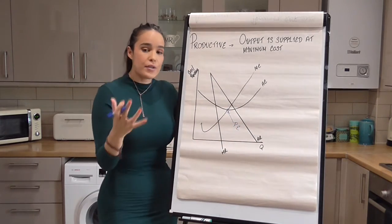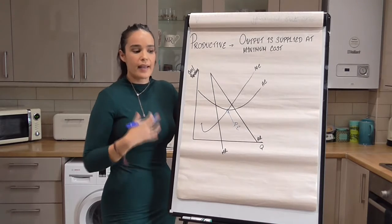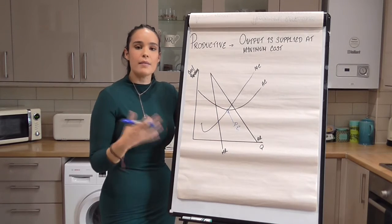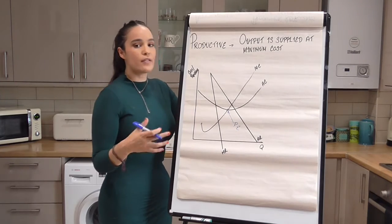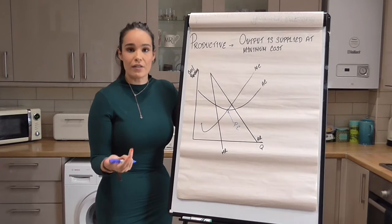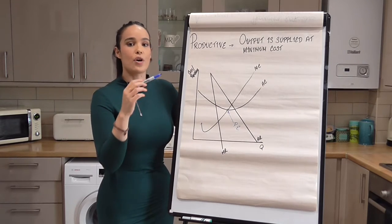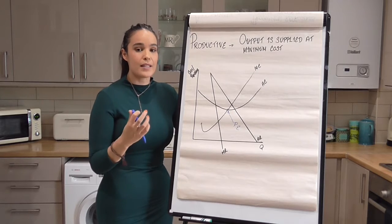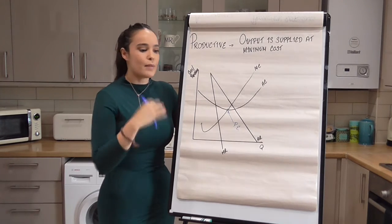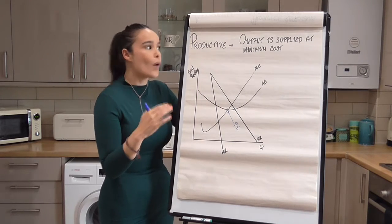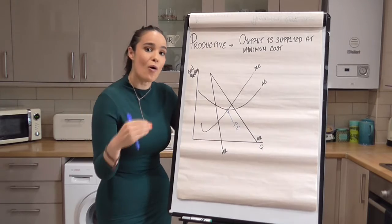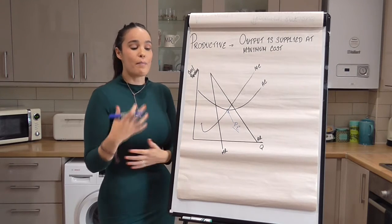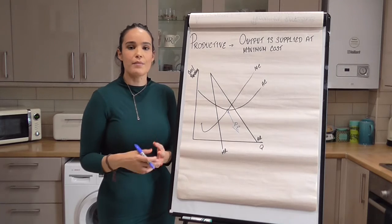This is really useful to understand in relation to predatory pricing and how difficult it is for the CMA to determine whether a firm is predatory pricing or acting with unfair competition, because a lot of unfair competition could be passed off as just becoming more productively efficient. Having your short-run average cost fall and passing that lower price on to consumers makes it very difficult for the CMA to distinguish whether a firm is limit pricing, predatory pricing, abusing their market power, or simply becoming more productively efficient. So productive efficiency is actually really important when we look at different market structures.